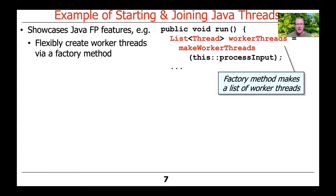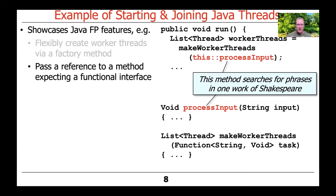In the run method, we're going to make a call to a factory method. A factory method is a Gang of Four pattern that makes some object — in this case, a list of worker threads. So make worker threads is a factory method that makes a list of worker threads. It's going to take a method reference — this is Java 8 modern Java stuff — to a method called process input, which does the searching for phrases in a given string, passed in as a method reference.